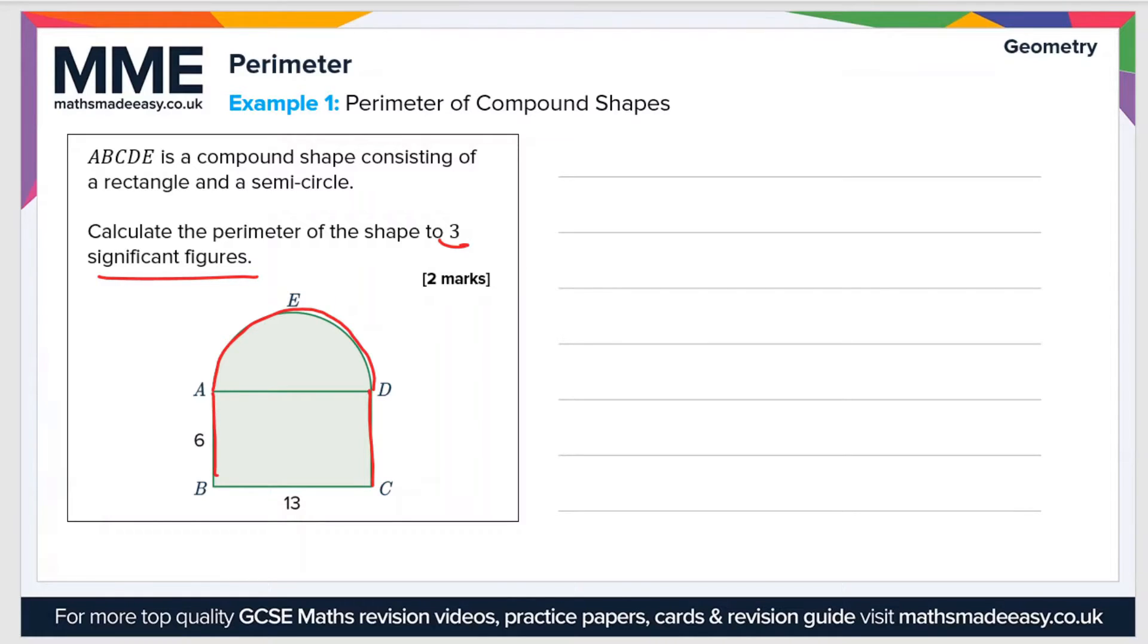Because ABCD is a rectangle, this side is also 6 centimetres. And then to work out the length of the curved side, well you can see here that this distance here, which is also 13, is the diameter of the semicircle.